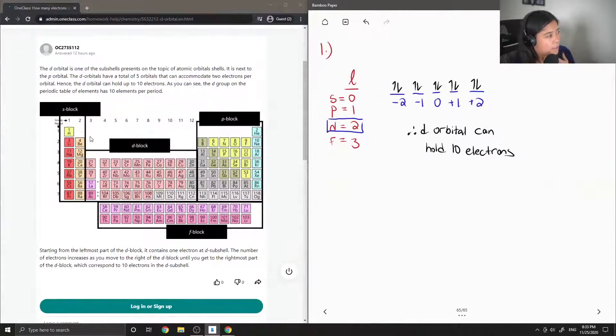And like they mentioned earlier, there are 10 elements per period. So 1, 2, 3, 4, 5, 6, 7, 8, 9, 10.